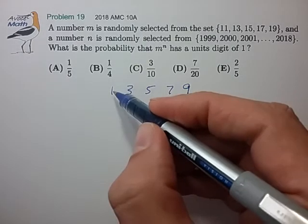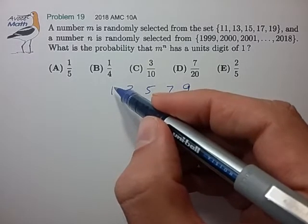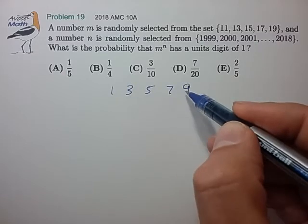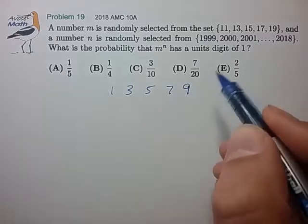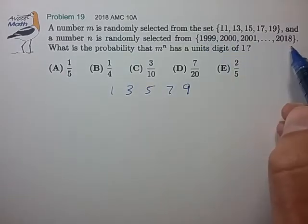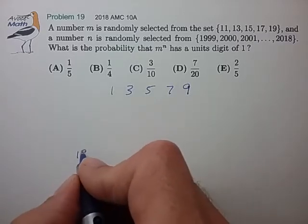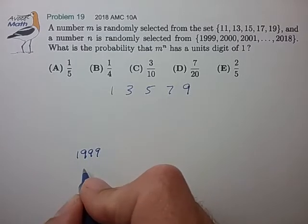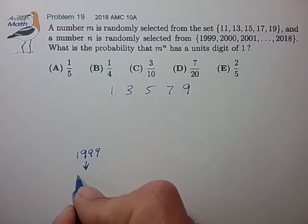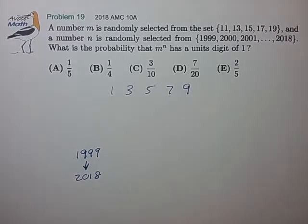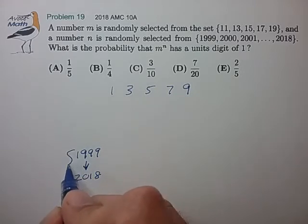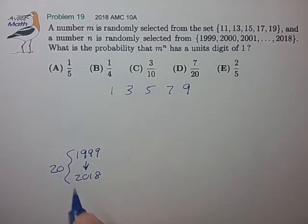And it looks like we're going to take multiplication powers of these units digits to try to construct what the units digits are when we get out to exponents of 1999 all the way to 2018. And let's see, it looks like we have 20 numbers here. So that's convenient.